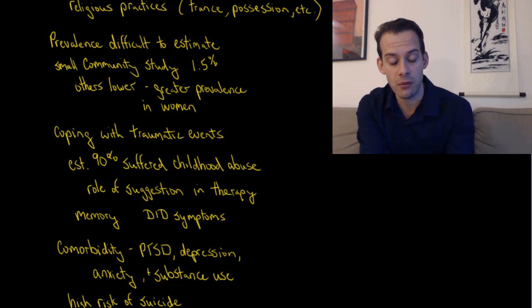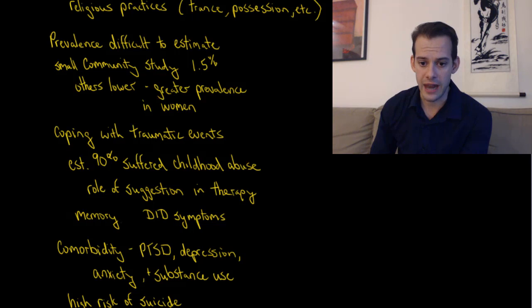Dissociative identity disorder is comorbid with a number of other disorders including PTSD, depression, anxiety disorders, and substance use disorders. And it carries with it an elevated risk of suicide.